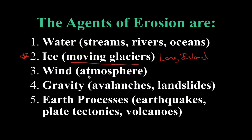Wind definitely moves quite a bit, and we'll see this in drier climates — it's going to have a pretty big effect on the landscape. Gravity, like I said, is really the driving force behind almost all of these. Earth's processes — earthquakes, plate tectonics, volcanoes — these are all different agents of erosion.